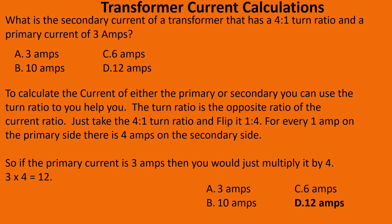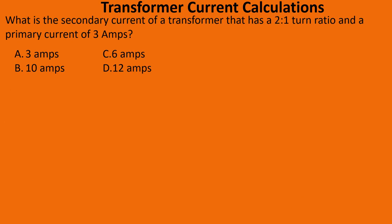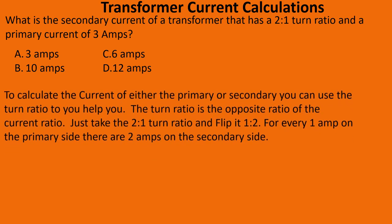Let's move on. What is the secondary current of a transformer that has a two-to-one turn ratio and a primary current of three amps? To calculate the current of either the primary or the secondary, you can use the turn ratio to help you. The turn ratio is the opposite ratio of the current ratio — just take the two-to-one turn ratio and flip it.